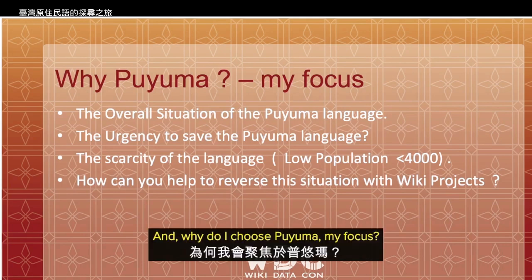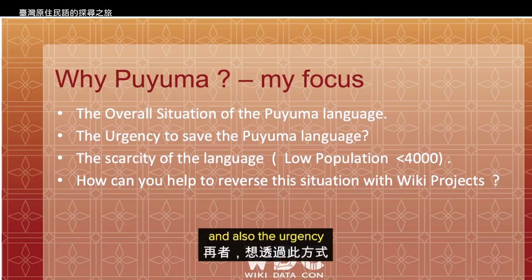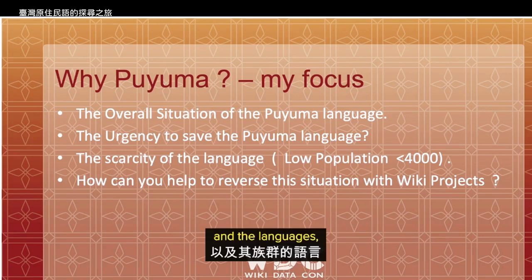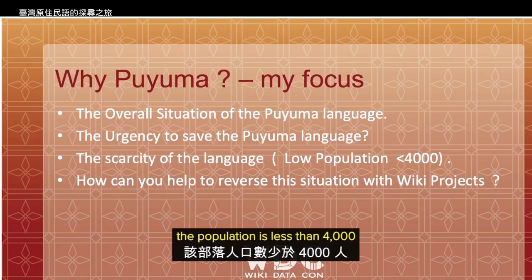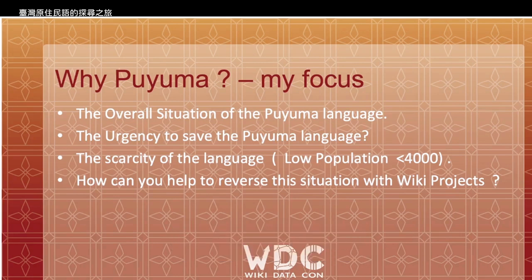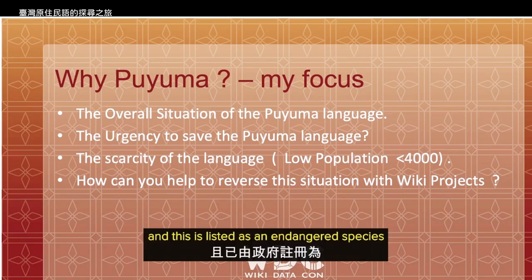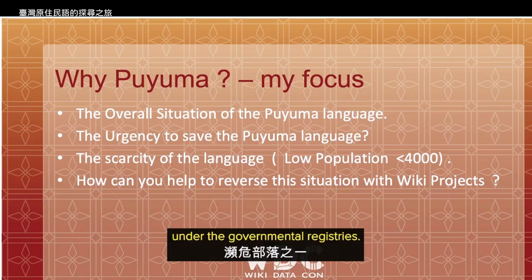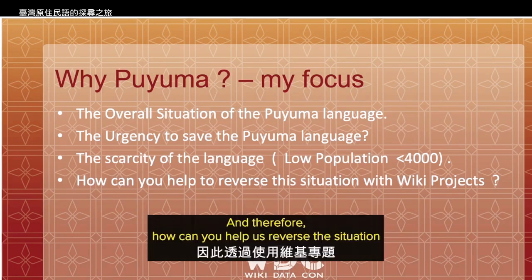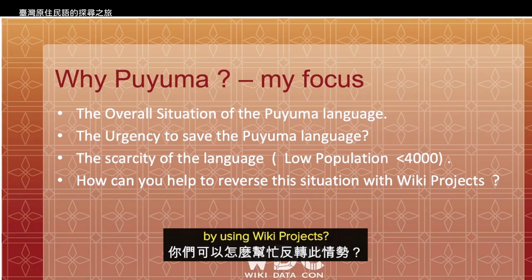And why do I choose Puyuma as my focus? It's based on the overall situation of the Puyuma language and also the urgency to save the Puyuma people and their language. Because right now, the population is less than 4,000, and this is listed as an endangered group under the governmental registries. Therefore, how can we help reverse the situation by using Wiki projects?